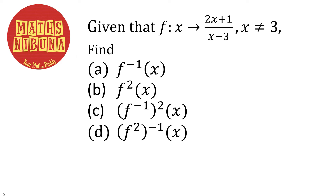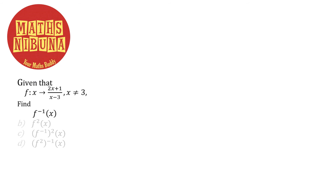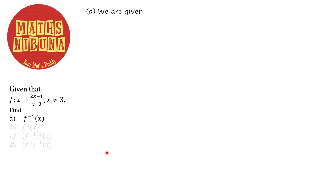Hi, have a good day. Today we will discuss another question on functions. We are given a function f(x) equal to (2x+1)/(x-3). The question asks you to find f⁻¹ (the inverse function), f² (the composite function), and then combinations of the inverse and composite function — parts a, b, c, and d. Let us look at each question one by one.